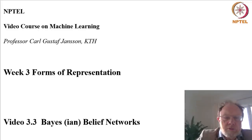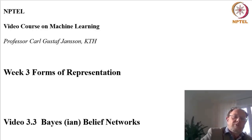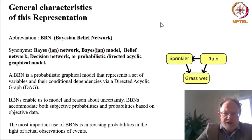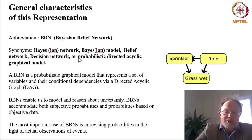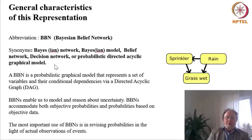Welcome to the third lecture of this third week of the course on machine learning. The theme of this lecture will be Bayes or Bayesian belief networks. A Bayesian belief network, abbreviated BBN, has a number of synonyms: Bayes network, Bayesian model, belief network, decision network, or the lengthier term probabilistic directed acyclic graphical model. Essentially, a BBN is a probabilistic graphical model representing a set of variables and their conditional dependencies, and its structure is a directed acyclic graph, abbreviated DAG.